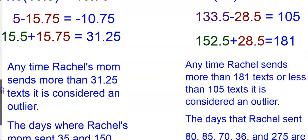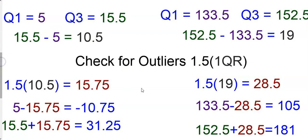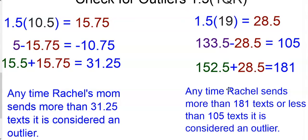If we return to Rachel's data, so again, we have 1.5 times the interquartile range. So the interquartile range is 19. 1.5 times 19 is 28.5. We subtract that from the first quartile and add that to the third quartile. This means that any time Rachel sends more than 81 texts or less than 105 texts, it's considered an outlier.